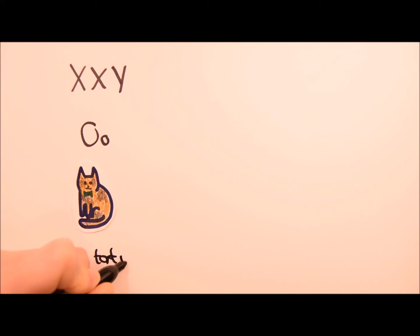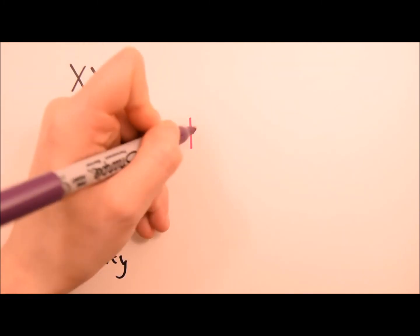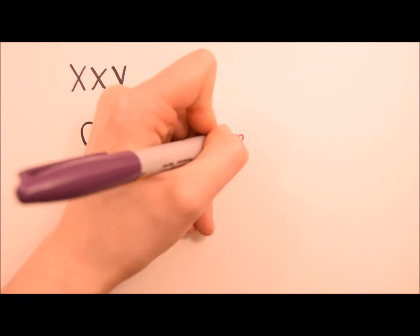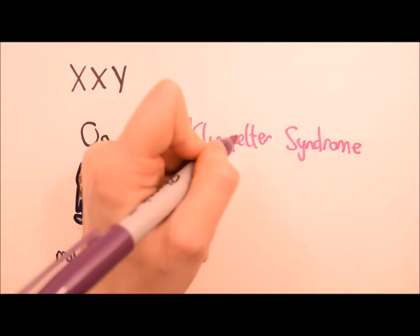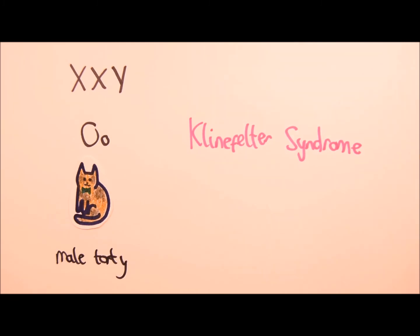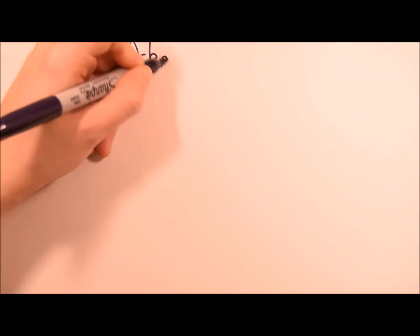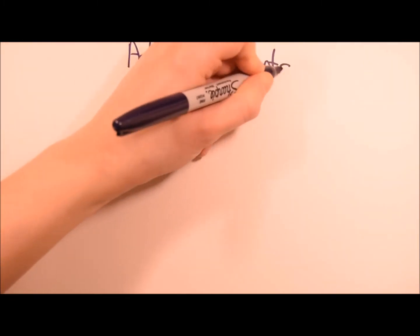A male cat can be a tortoiseshell if they inherit an XXY chromosome arrangement. In humans, this is known as Klinefelter syndrome. Most patients live normal and healthy lives, but it does cause infertility.